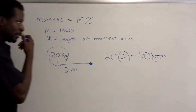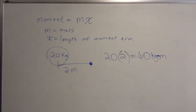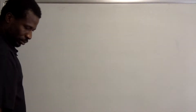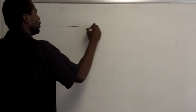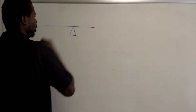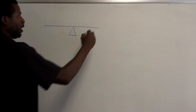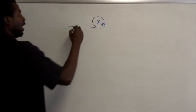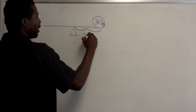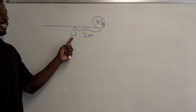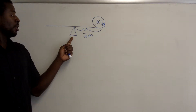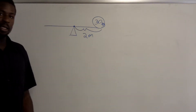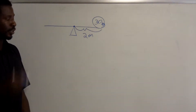Now let's take a look at a simple example. We have a seesaw — we all remember seesaws from childhood. Over here there's a child that is 30 kilograms, and that child is two meters away from the pivot point of the seesaw, called the fulcrum. The moment of this 30-kilogram mass about that fulcrum is two times 30, or 60 kilogram-meters.